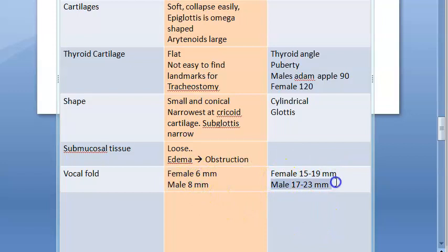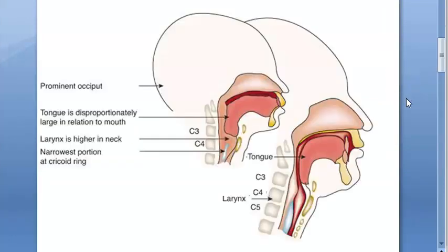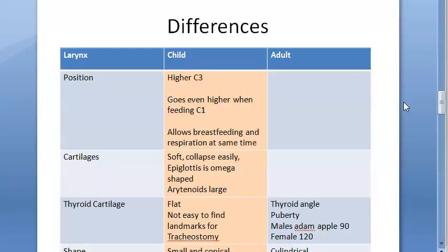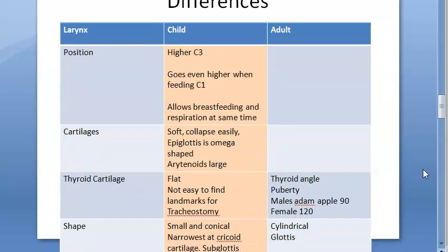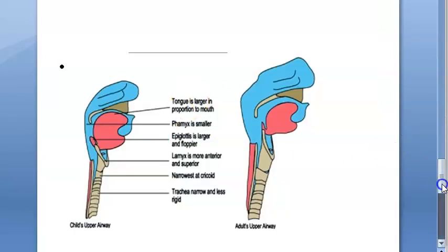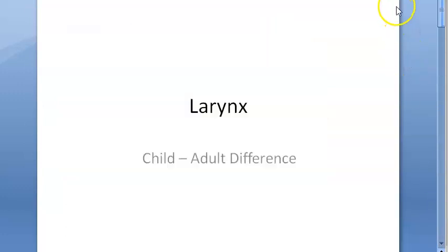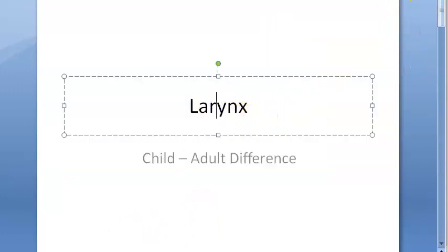To summarize the differences between child and adult larynx: in the child, the larynx is higher and more anterior, conical and narrow at the subglottis, the cartilages are very floppy and soft, the thyroid cartilage is soft, the submucosal tissue is loose, the vocal folds are smaller, and the tongue is proportionately bigger. That covers the differences in the larynx between child and adult.